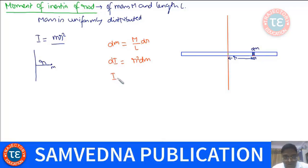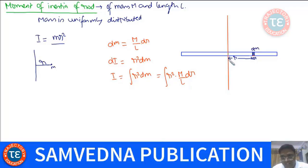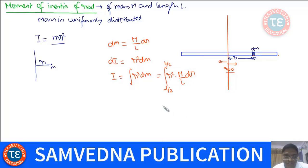If we want the moment of inertia of the whole rod about this axis, we integrate R²·dm. Putting the value of dm as (M/L)·dR. This axis is the reference for measuring R, so R = 0 at this axis. If this side is taken as positive and the other as negative, the limit of R goes from −L/2 to +L/2.